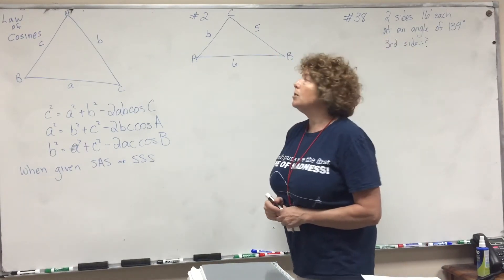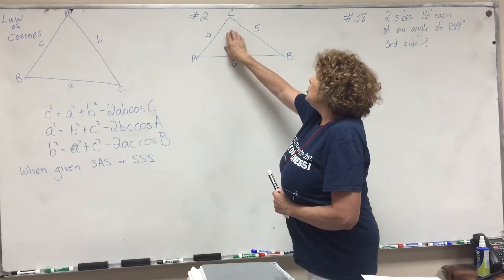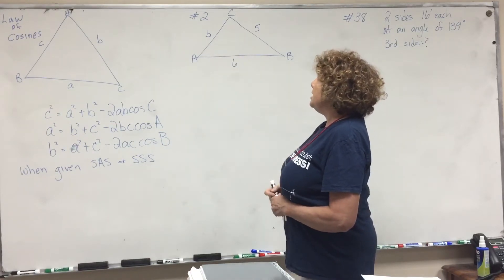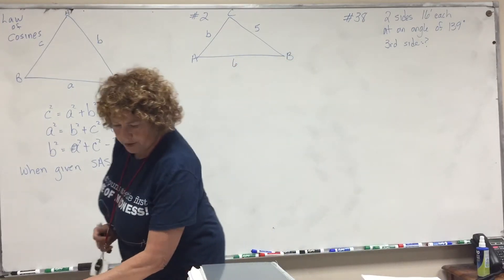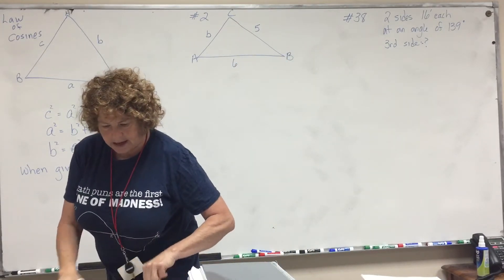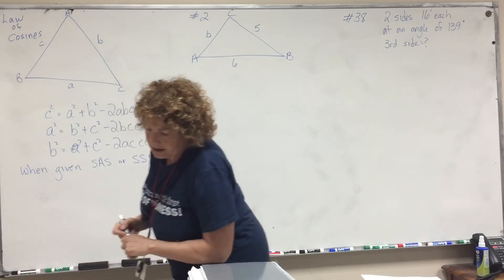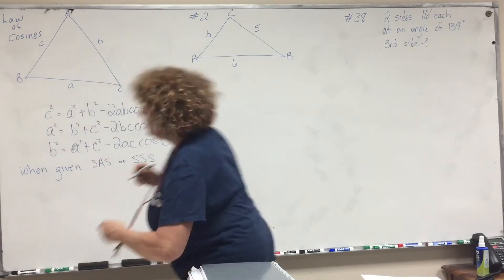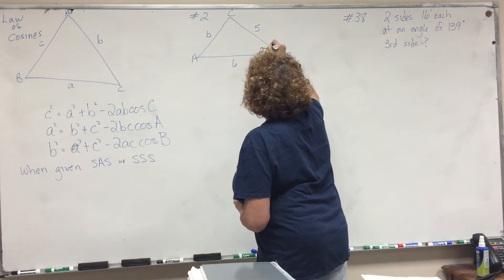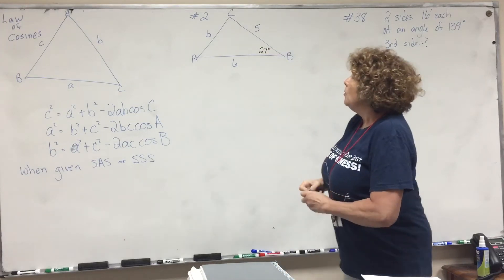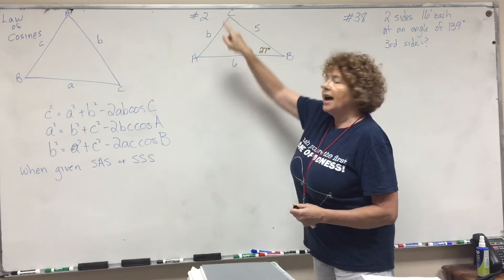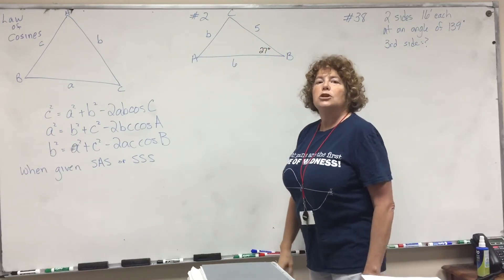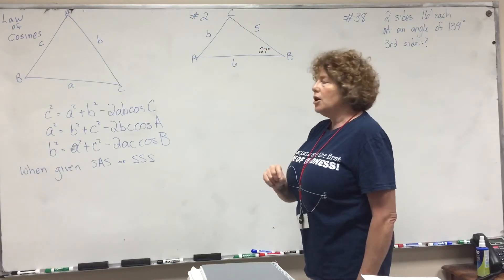So let's look at number two on the homework. We are told to find side b. Well, I forgot one piece of information, obviously. Yes, this is 27 degrees. So we're in a situation where we have a side, the angle in between, and the side. So that's a perfect situation to use the law of cosines.